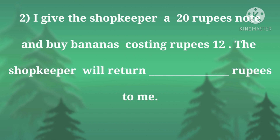Now the second one. I give the shopkeeper a 20-rupee note and buy bananas costing 12 rupees. The shopkeeper will return how many rupees to me? I have given the shopkeeper 20 rupees, but the bananas are only 12 rupees. So I will get the remaining money back — I have to do subtraction.